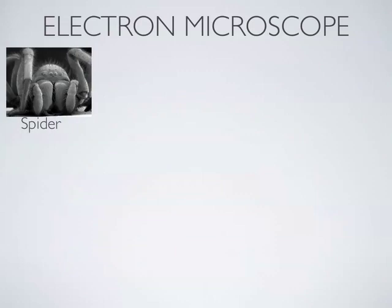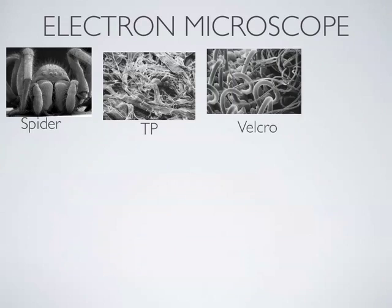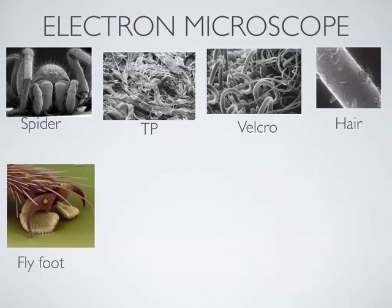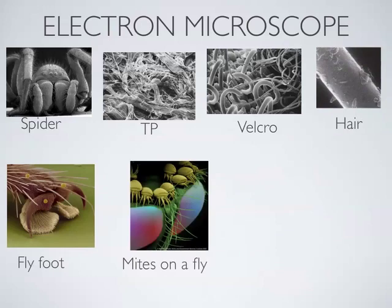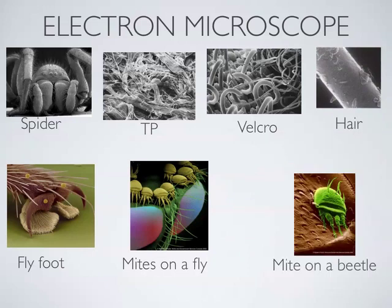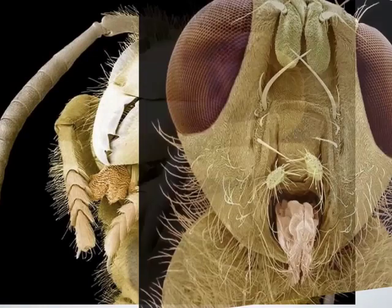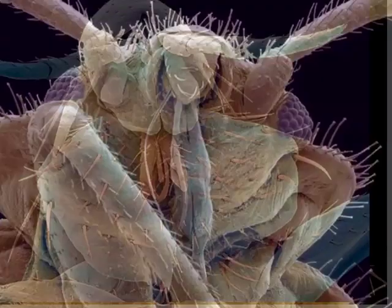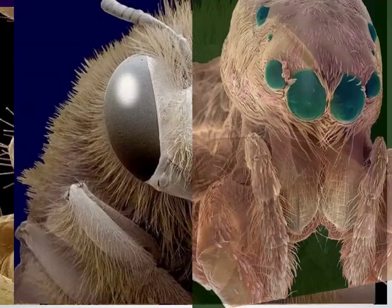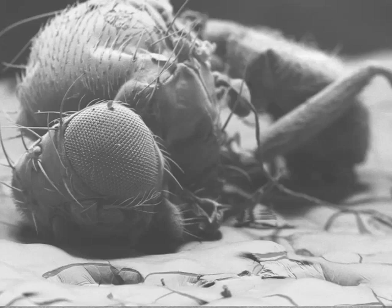If you look at the electron microscope, we see things much closer up. Images are often gray unless they've been artificially colored. To use an electron microscope, you often have to coat whatever you're looking at with a thin layer of metal so electrons bounce off of it — giving generally just a black and white view. Here's a spider, toilet paper, Velcro, a human hair, a fly's foot, a fly with parasitic mites living on it, a mite living on a beetle, and more — some artificially colored so they stand out.